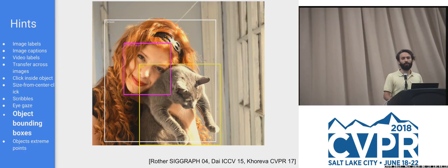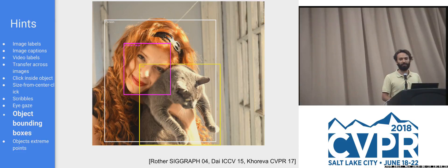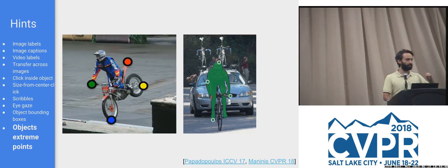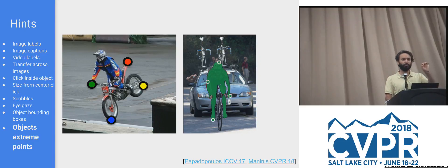The classic hint we'll discuss more is bounding boxes — if you already have a detection dataset you can use it for pixel labeling or instance segmentation. An advanced version proposed last year is providing a bounding box by clicking the extreme points of the object instead of dragging and dropping. This is faster to annotate but also provides a cue about which pixels belong to the boundary of the object, making it a strong cue to get the segmentation.